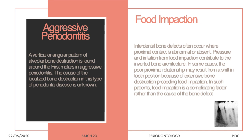Between the facial and lingual plates, the interdental bone is lost, resulting in crater formation in the interdental region — possible with food impaction. In aggressive periodontitis, the pattern of bone loss is completely different: only molars and incisors are involved, with aggressive arc-shaped bone loss and a bilateral mirror-like pattern — the bone defect on one side mirrors the opposite side.